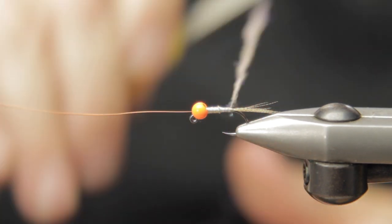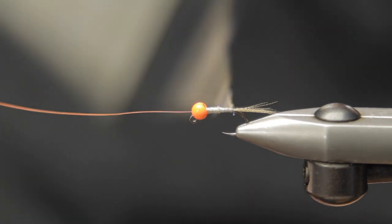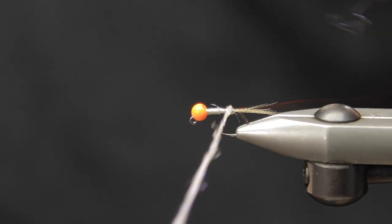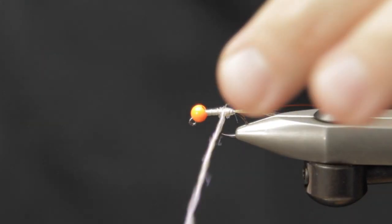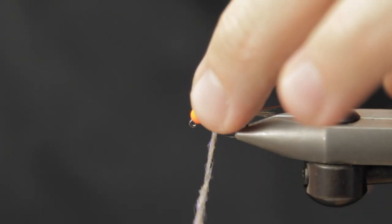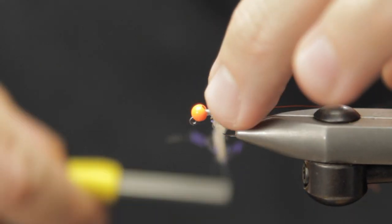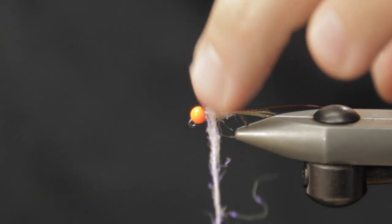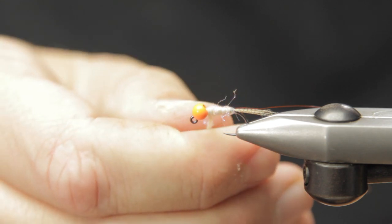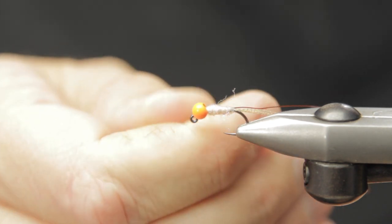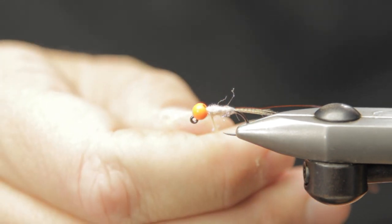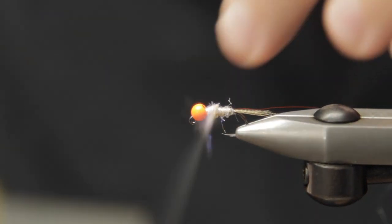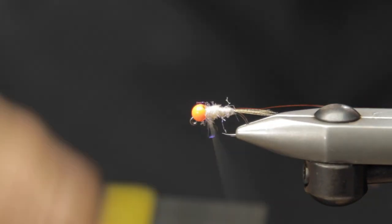We'll just go ahead and start to palmer. After you have a few wraps in here, I'm going to pull the wire backwards, which will allow us to support the dubbing noodle and counter-rib this. A little bit of bugginess here isn't a bad thing. I'm going to re-spin the dubbing noodle and we're going to continue all the way up to the thorax. I build a little bit extra in my thorax section just because I like a little bit of a step up there.